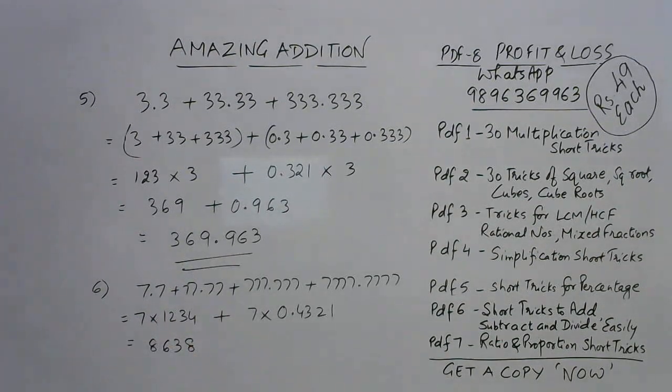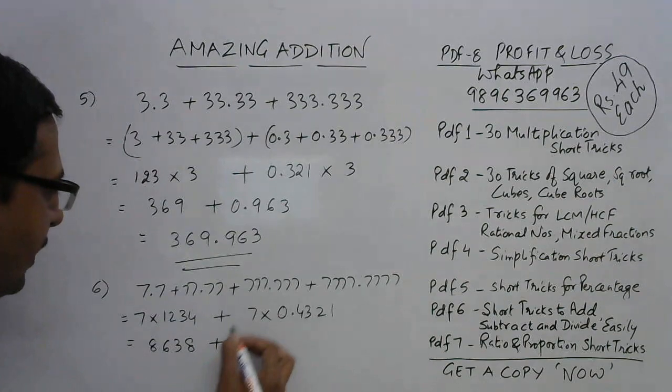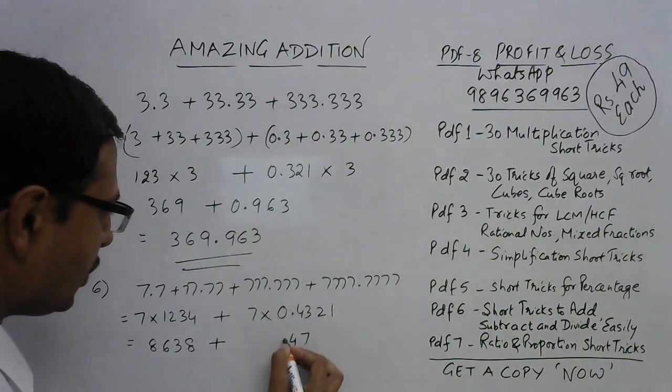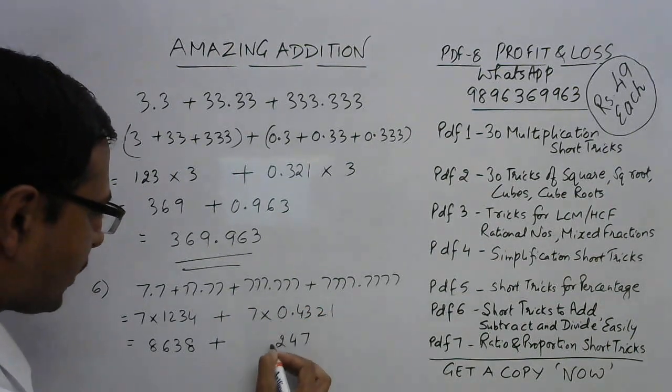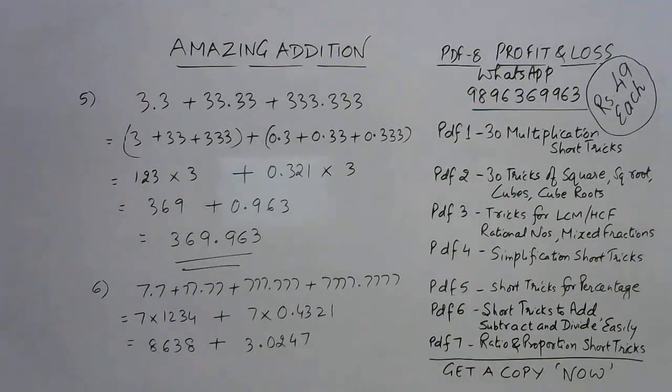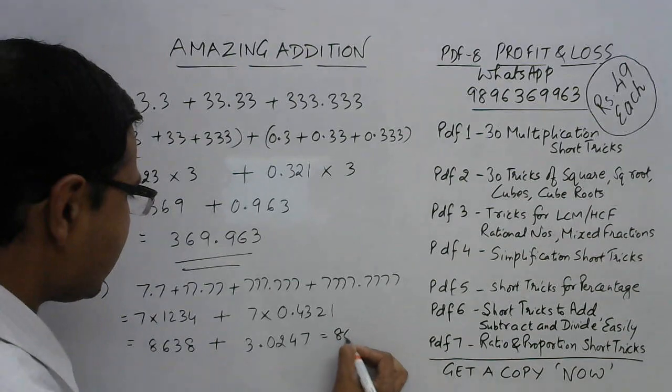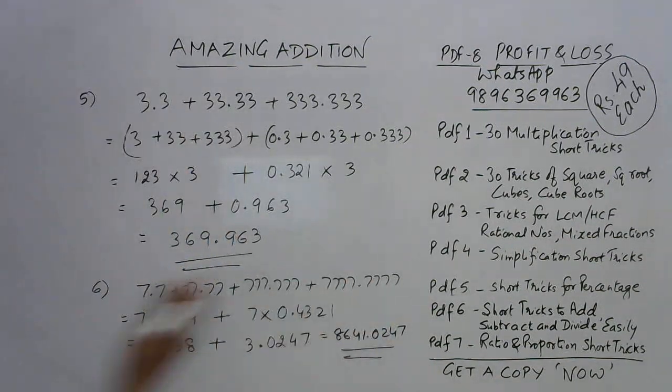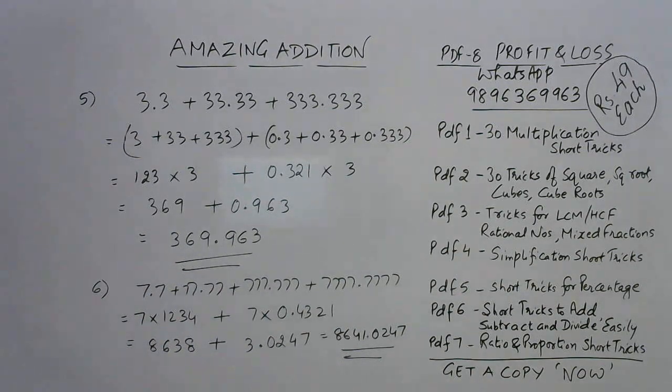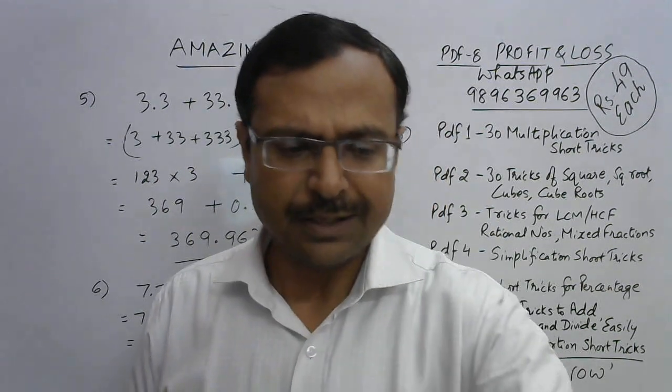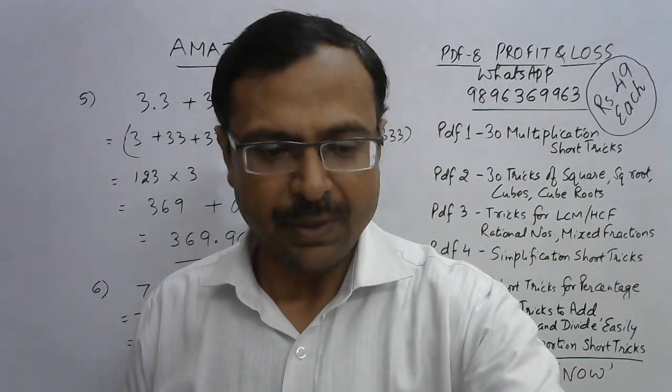Now let's find the product here. 7×4=28, 2 carry means 23, 3, 2 carry means 16, 6, 1 carry means 8. So 8638. And now multiply this: 7×7=49, 7×1=7, 7×2=14, 4, 1 means 22, 2, 2, 2 means 30. So 0 and 3. Now add them to get the final answer of this question. This is 8638 + 3024.7, so 8641.7284.